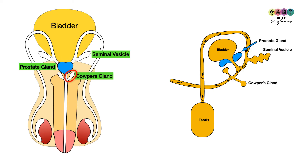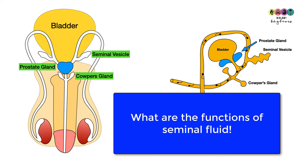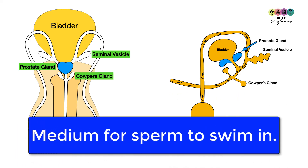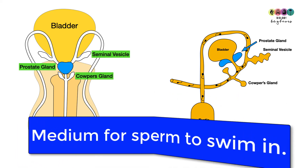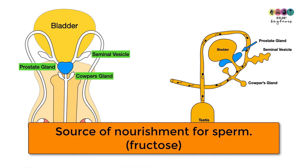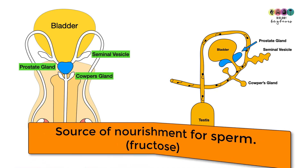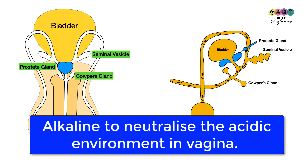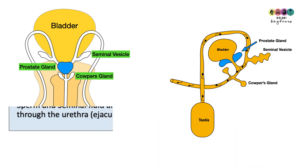What is the purpose of seminal fluid? Firstly, it acts as a medium for the sperm to swim in. It's a source of nourishment because it contains fructose. Very importantly, it's alkaline and this neutralises the acidic environment of the vagina — if this didn't happen the sperm could not survive.